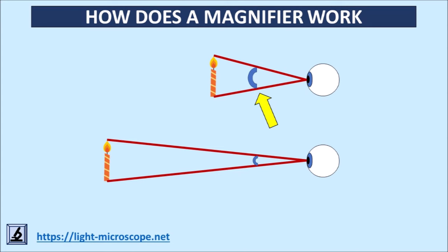It is the size of this angle that determines how large we recognize an object. This is also the reason why objects look smaller to us with increasing distance.